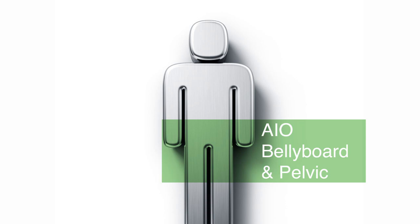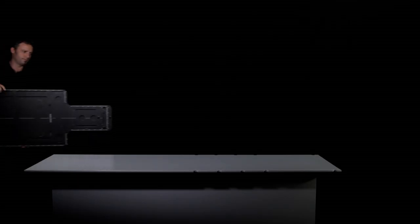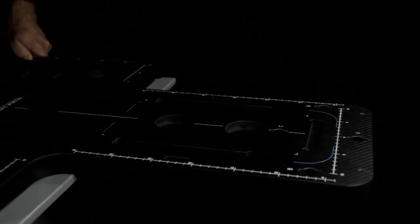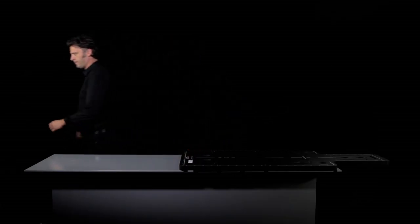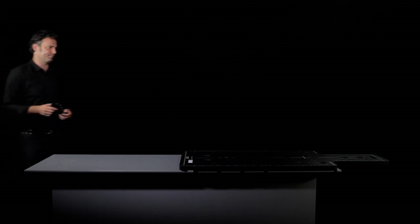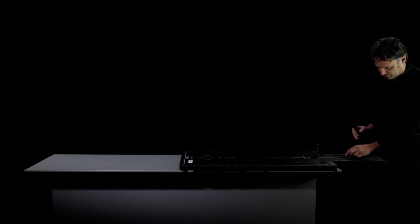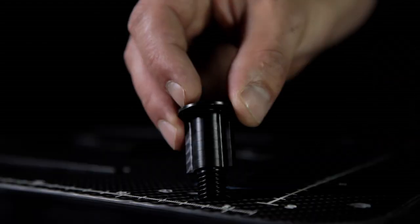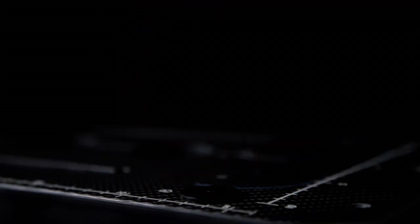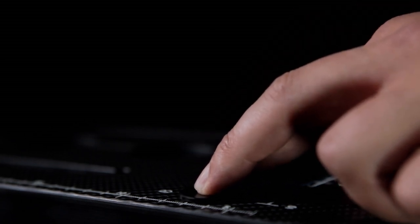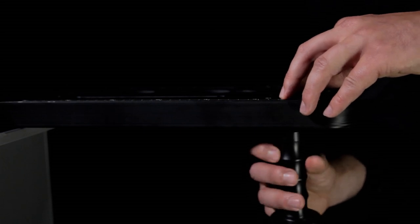AIO Bellyboard and Pelvic. The AIO Bellyboard is usually used for patients in a prone position. To use it, first you need to put the AIO base plate so that it overhangs the therapy table to make room for the two handgrips. Then attach the two handgrips to the AIO base plate. First of all, place the screw of the handgrip into the holes marked B and D in the base plate. Then screw the handgrip into the thread from underneath.